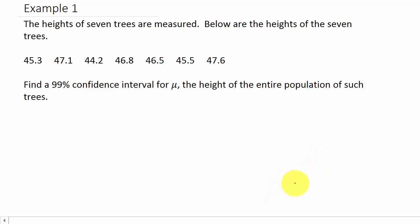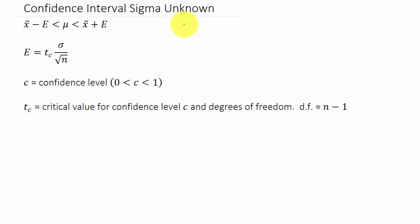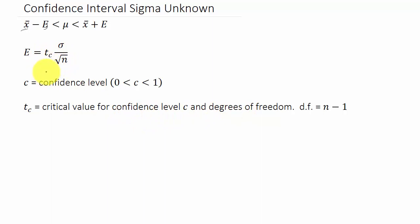Here's another video on confidence intervals, and this one has Sigma unknown. It's the same setup: X-bar minus E is less than mu, which is less than X-bar plus E. This is our confidence interval and we have to calculate E. In this problem the population standard deviation Sigma is unknown. If Sigma is known, we use the standard normal curve to find the critical value. If Sigma is unknown, we use the Student's t-distribution table.